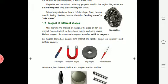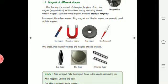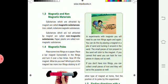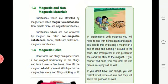Bar magnet, horseshoe magnet, ring magnet, needle magnet, oval shape, disc shape, and cylindrical shape magnet. And in this class we are going to see about magnetic and non-magnetic materials.